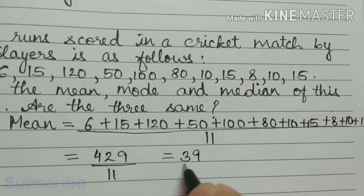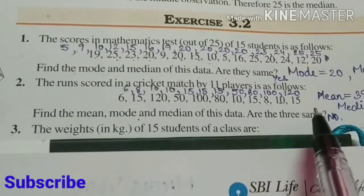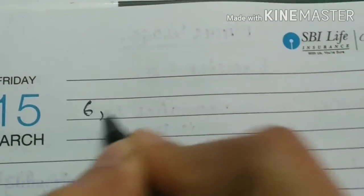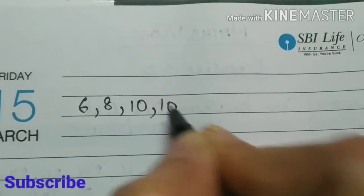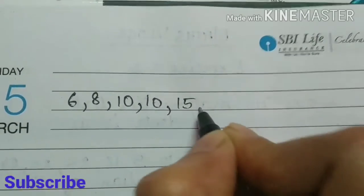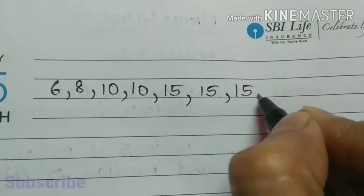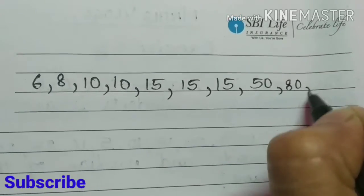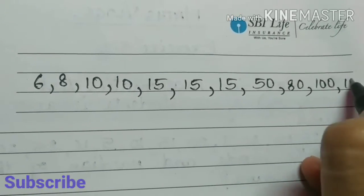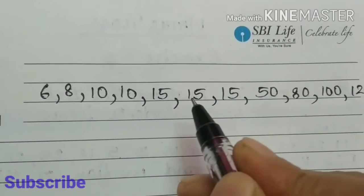That is equal to 39, so mean is 39. Now let us arrange these numbers in ascending order. So we will get 6, 8, 10, again 10, 15, 15, 15, 50, 80, 100, and 120. So 11 observations are there.